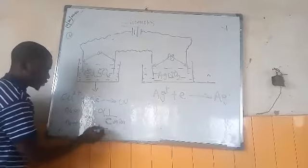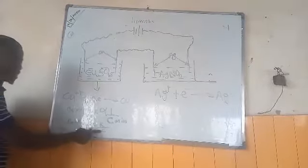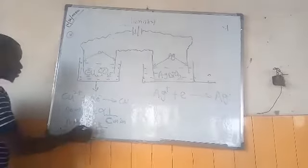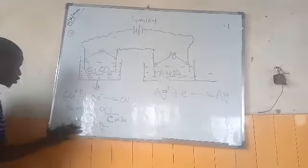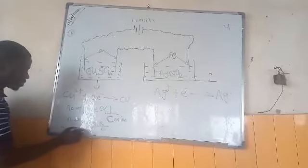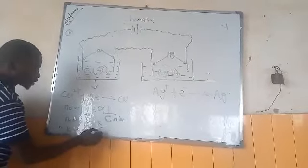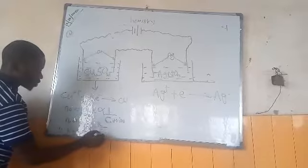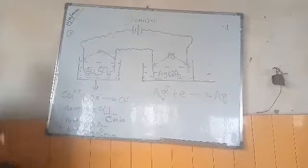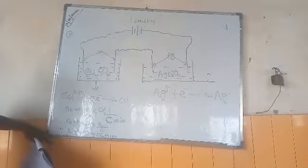So if you cross-multiply, you have K equal to number of moles multiplied by charge on the element. Now, this one is for copper.